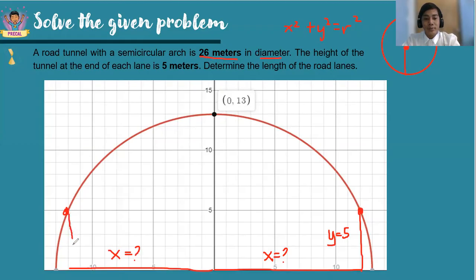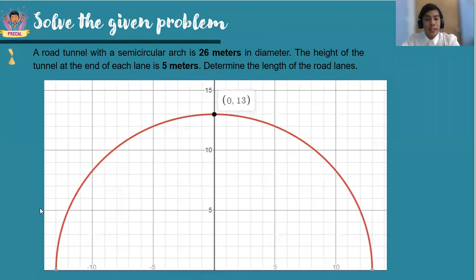Again, we do not know the x value here, but what we know is the height of the tunnel at the edge of each lane is 5. So we can assign coordinates for this value. So we have (-x, 5). And on this part, we have (x, 5). So to get the length of the road lanes, we need to add the length here and the length here. So we just double it. Now we can solve.